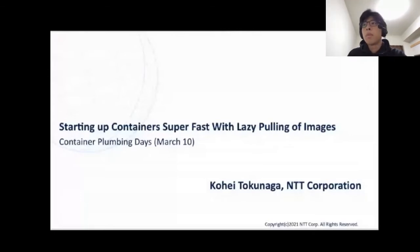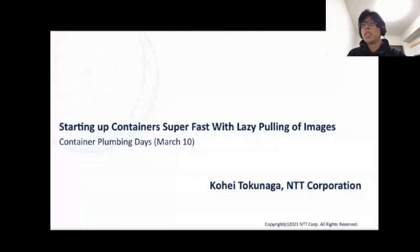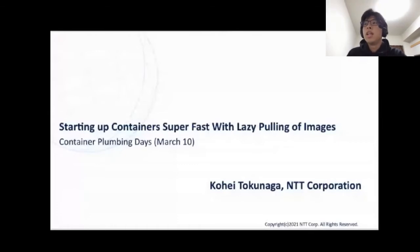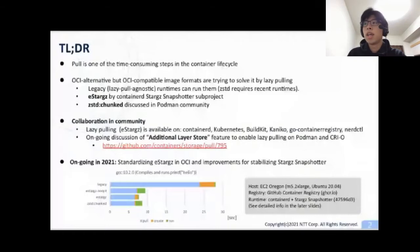Pull is one of the time-consuming steps in the container lifecycle. For solving this issue, OCI alternative but OCI-compatible image formats are proposed in the community. Because of the compatibility to the current OCI spec, legacy lazy-pull-agnostic runtimes can run it. eStargz is proposed by the ContainerD Stargz Snapshotter sub-project. The structure is based on Google's CRFS project, and zstd-chunked is proposed by Giuseppe Scrivano from Red Hat and discussed mainly in the Podman community.